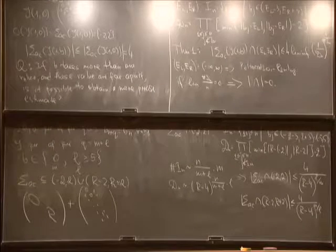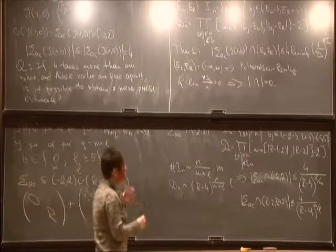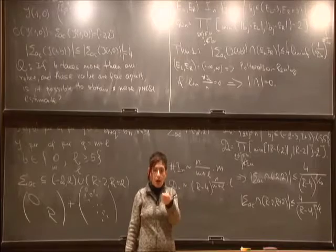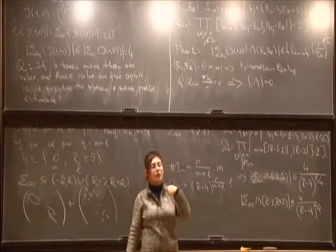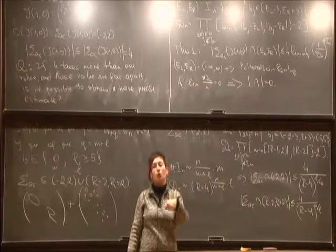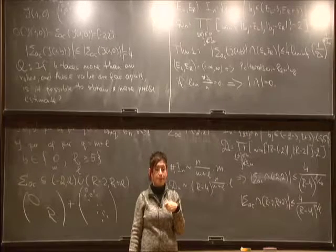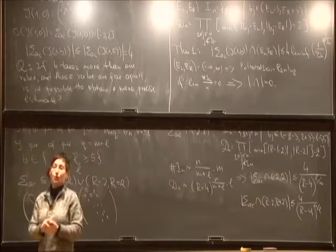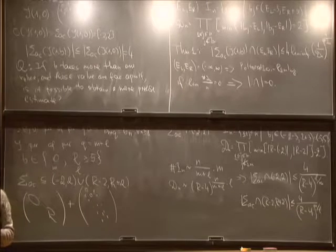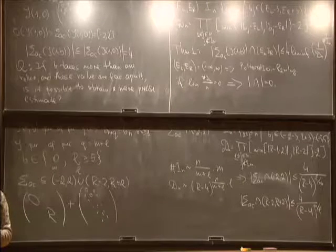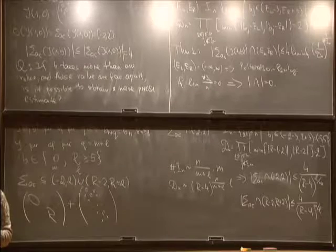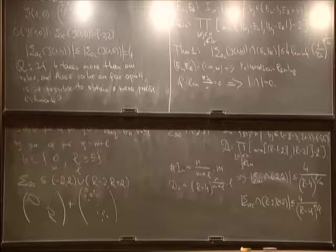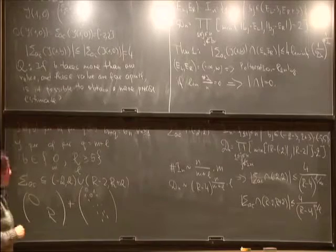These inequalities are sharp including the constant in the following sense: if r is large enough, one can always find a potential B for which it is almost an equality. So this is a partial answer: you can find a sequence of zeros and r's such that the inequality is almost an equality.